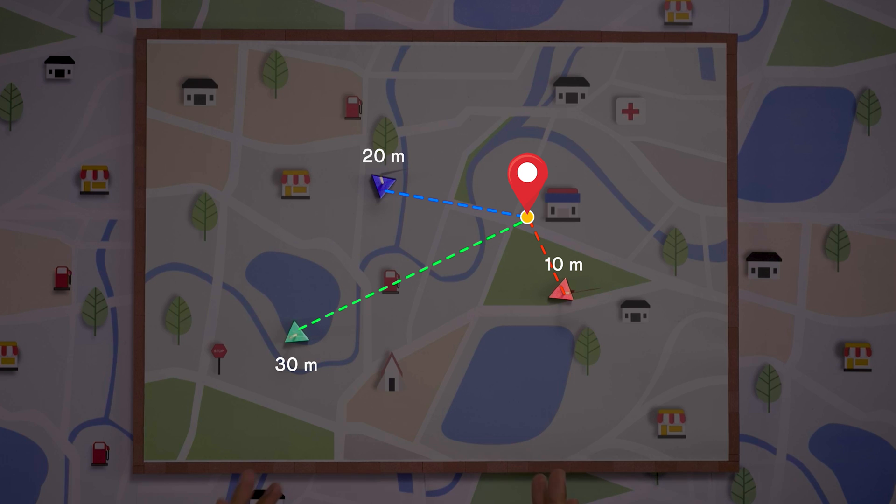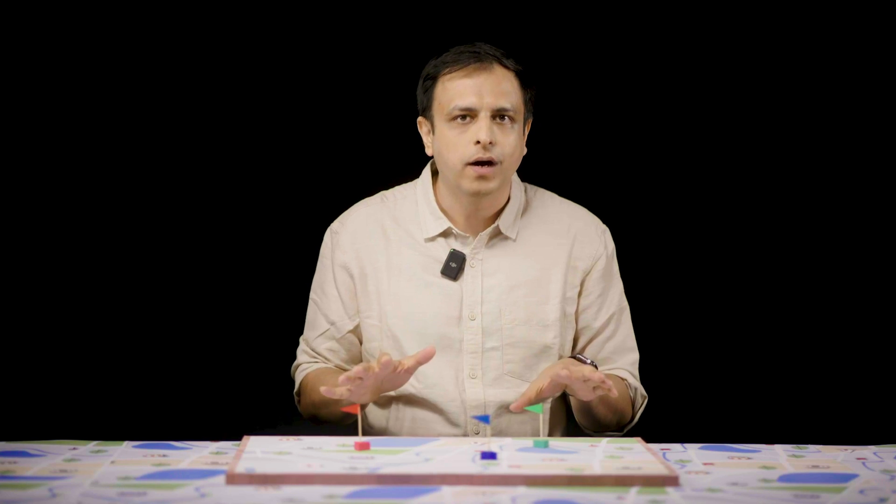By the way, we call this set of numbers or distances 10, 20, 30 as my coordinates. Every other point on this 2D world will have a unique set of coordinates.